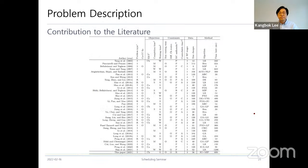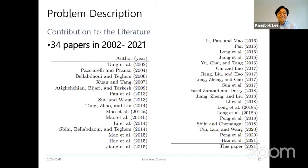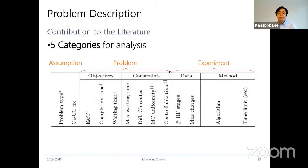I searched papers from the literature. I believe you cannot read this, so I summarized the literature review. We collected 34 papers within the last 20 years, the first one being the Missbauer et al. paper from 2002. We set some categories for analysis: assumptions, which may change depending on the paper, and we are going to talk about problem settings and experiments. Most of the papers have experiments because this is quite a practical problem.